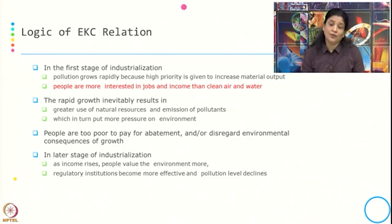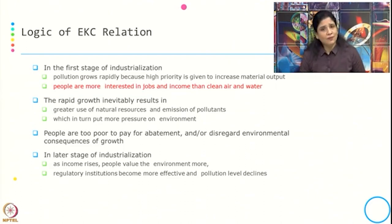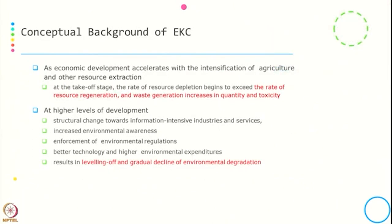At the later stage, when industrialization happens and income rises, people value the environment more, regulatory institutions become more effective, and pollution levels decline. For example, from an individual perspective: when our income increases, we try to consume more, and then we consider whether this is environmentally friendly. Initially, with an increase in income and growth, we try to consume more rather than consume more environmentally friendly products. But when our income increases further and we can afford to go for environmentally friendly products, then only do we buy them.